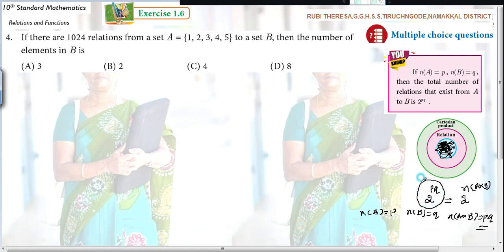Usually how will we write the subsets? Suppose A equal to 1, 2. What is N of A? 2. How many subsets for this? How will you write? What is the general formula? 2 to the power of N. That means 2 to the power of N of A, that is 2 squared, that is equal to 4.